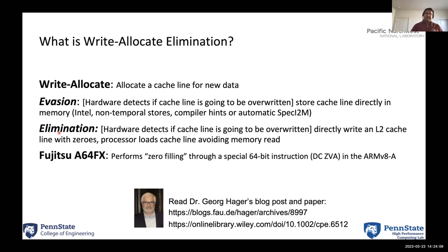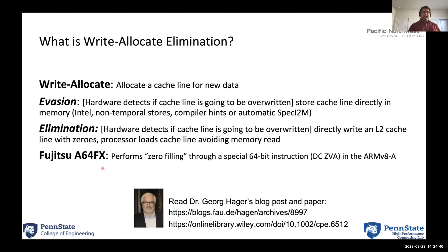The newer Intel machines, like Intel iFlick, have spec i2m which automatically detects where non-temporal stores could happen and makes adjustments. Then you have the option of elimination: you directly write a cache line with zeros, and the processor loads the cache line — it only deals with the cache line and can avoid the memory read. In Fujitsu A64FX, there is an option of allocating a cache line and zero-filling it, thereby avoiding the memory read through a special instruction called DCZVA. You can read more about these options in Dr. George Hager's blog post.